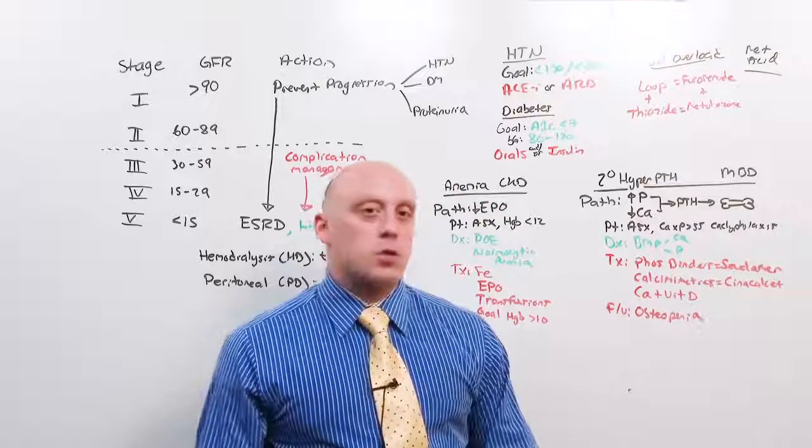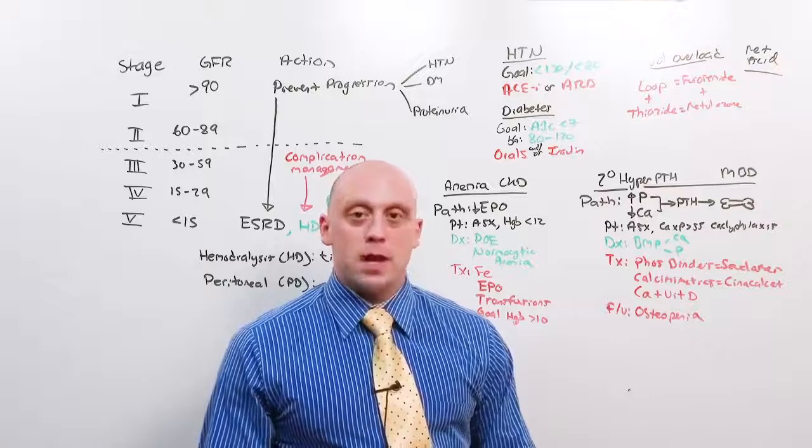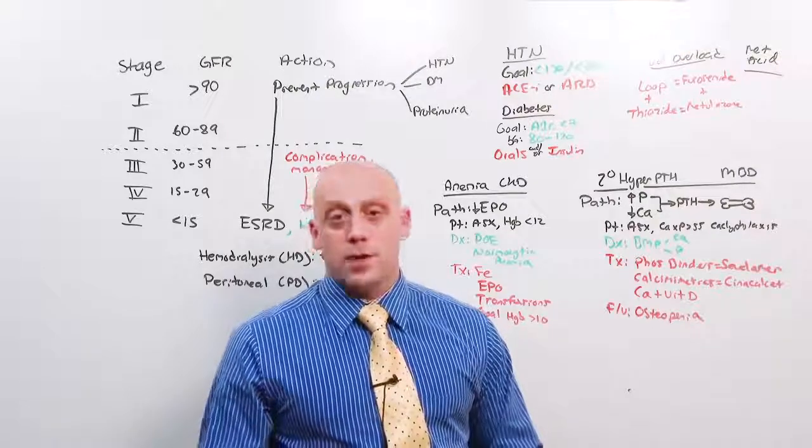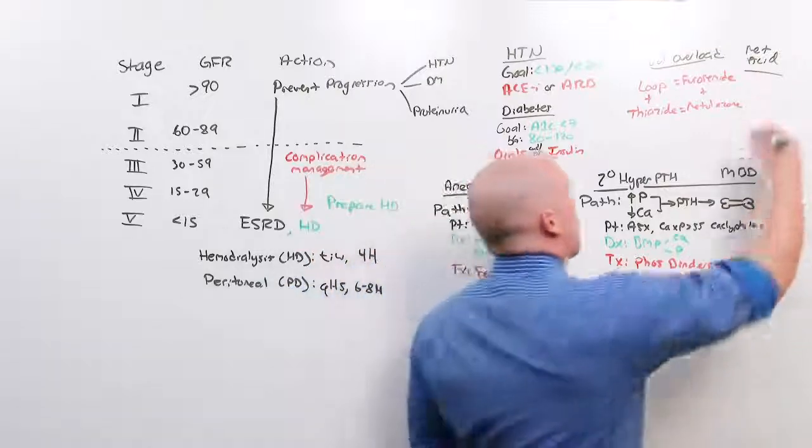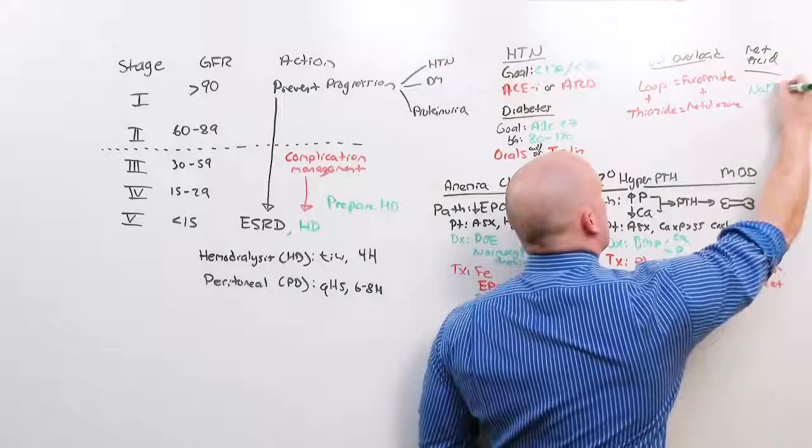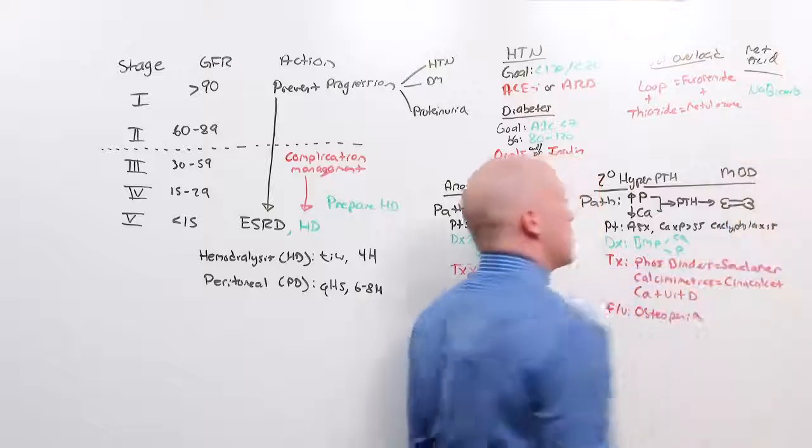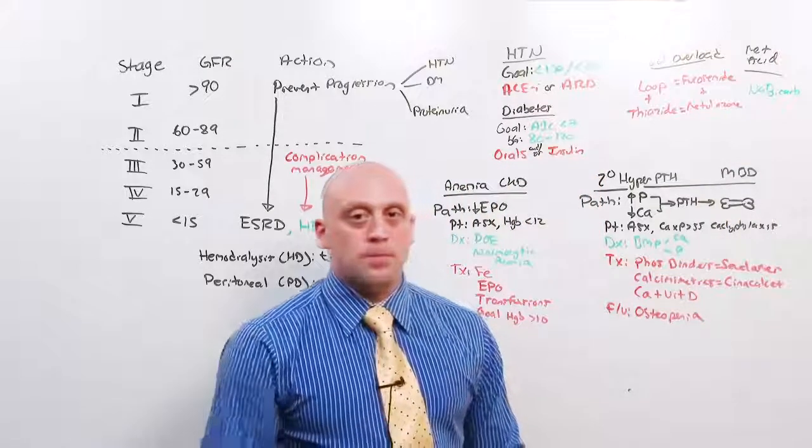And lastly, metabolic acidosis. The bicarb usually settles out somewhere between 10 and 20, and if they have that, you don't want them to be acidotic, and give them sodium bicarb orally to balance out their bicarb.